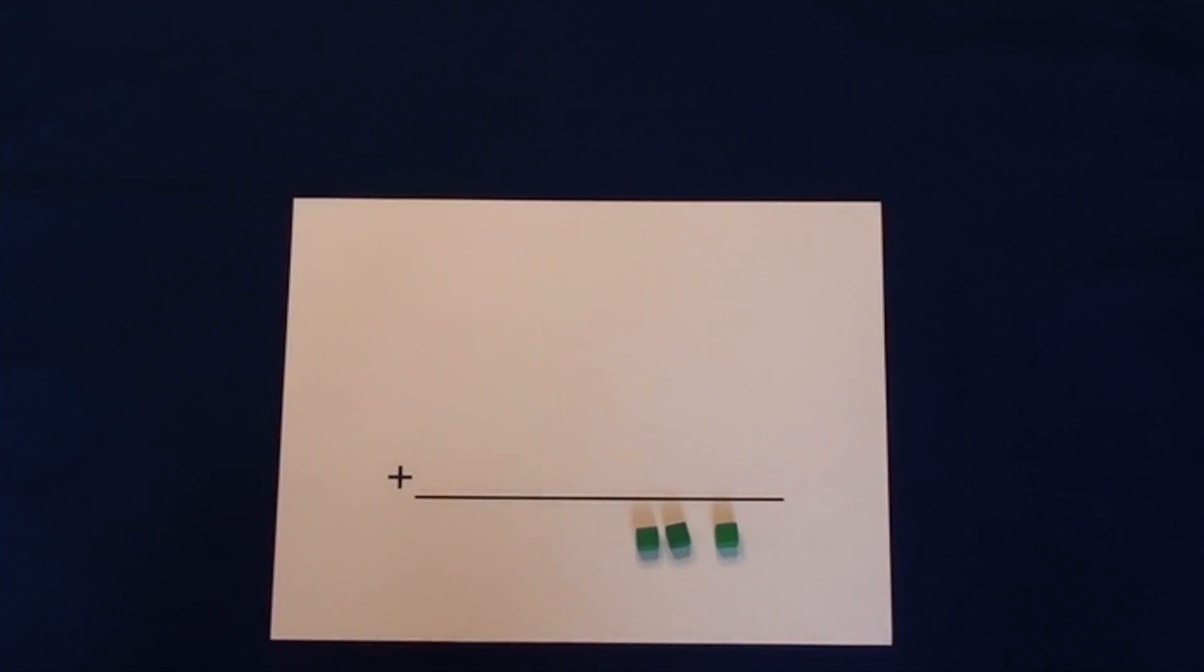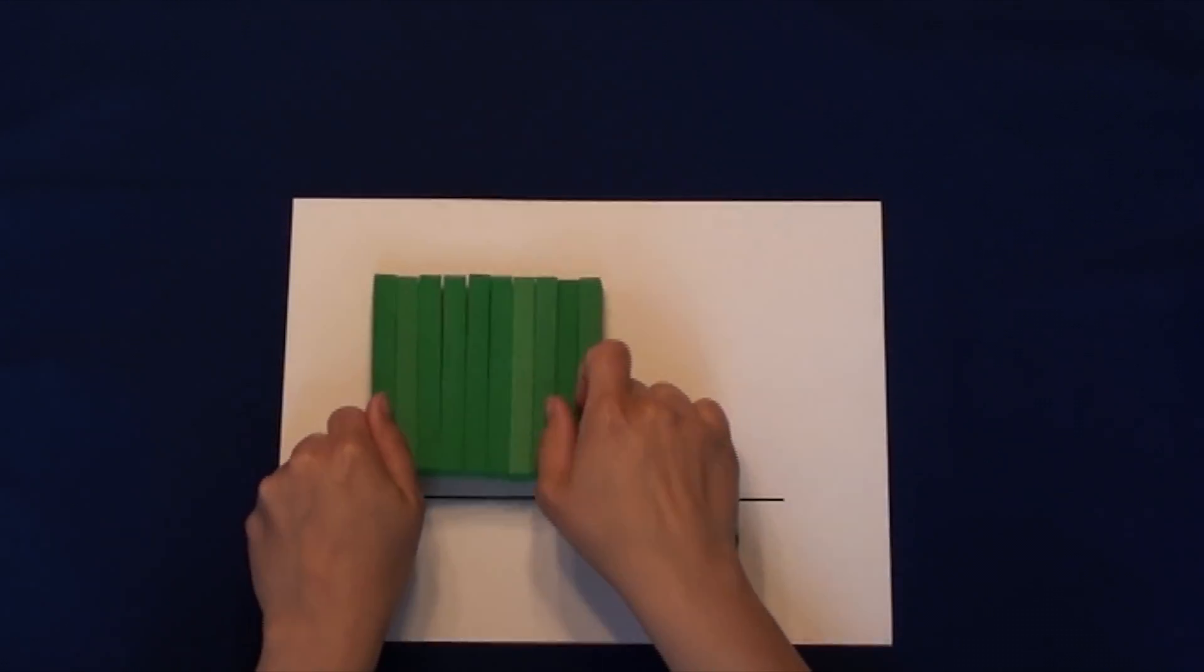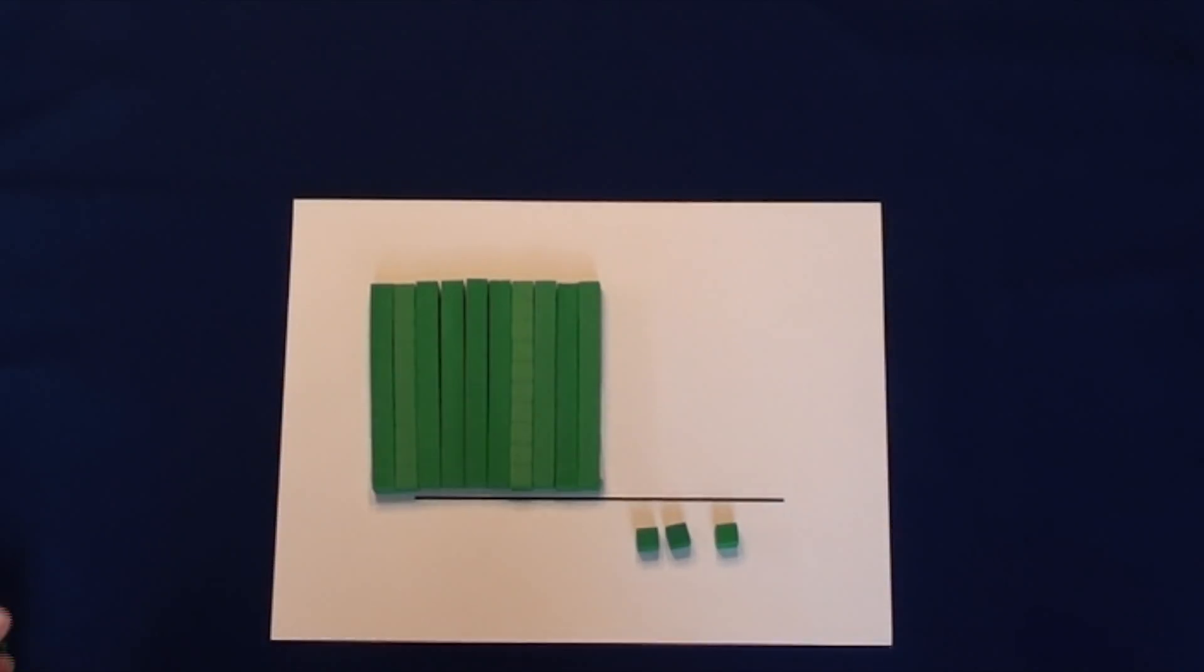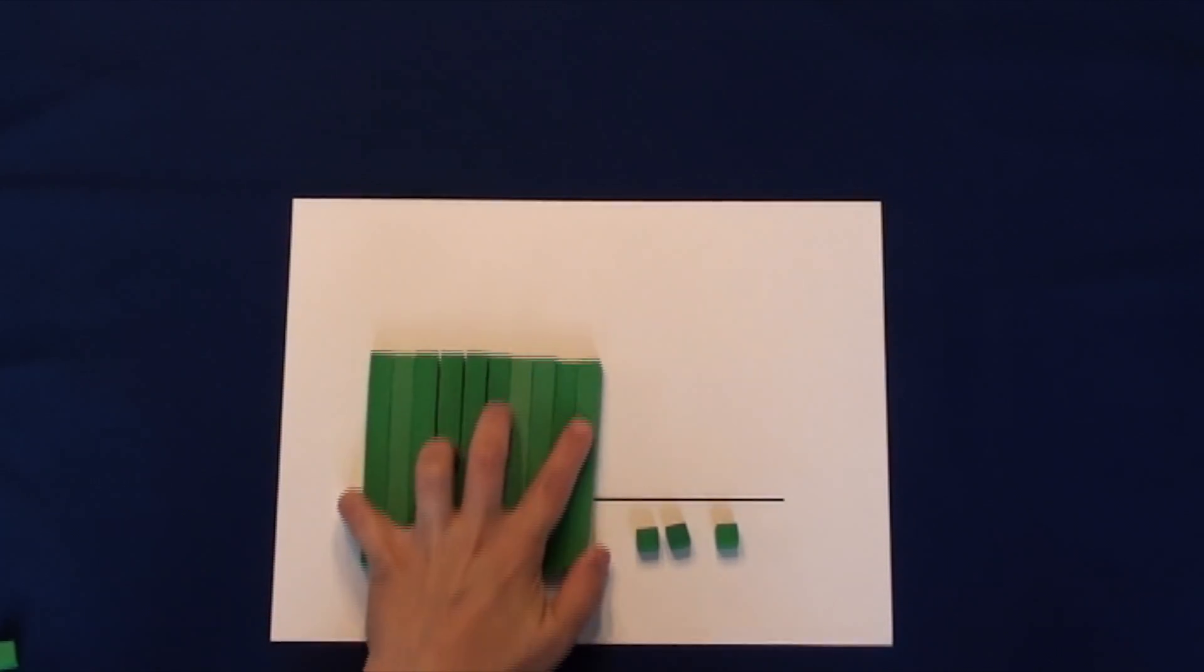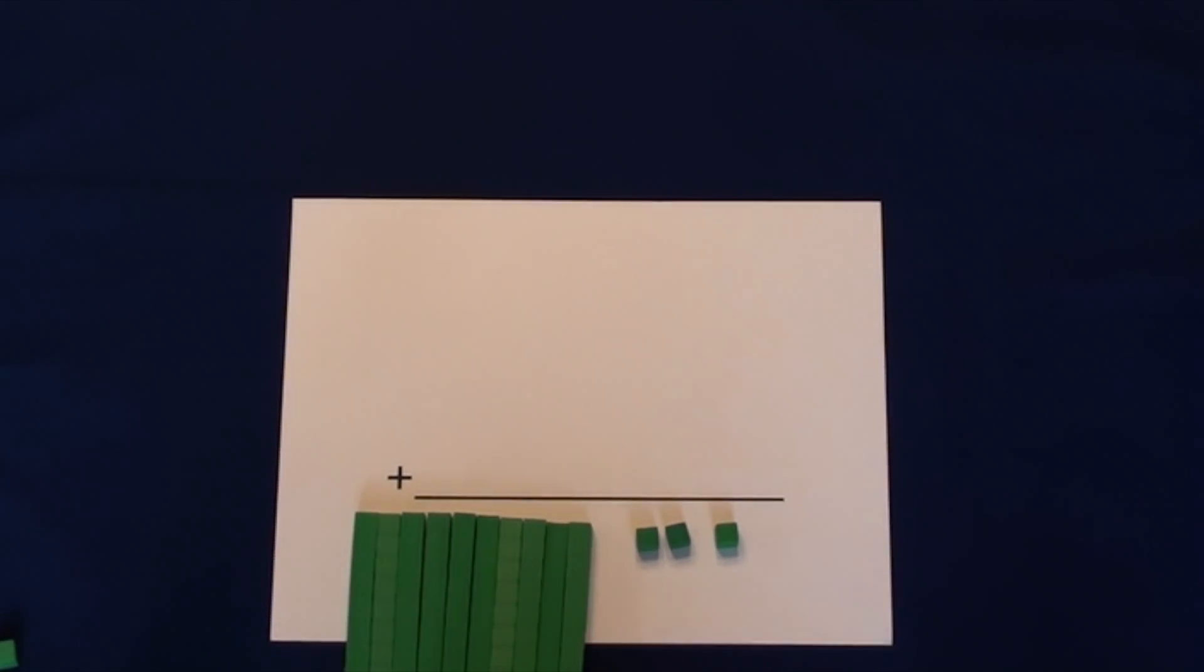10 tens equal 100. There are no remaining tens, since we had only 10 of them. We can drop the 100 down to the solution row because there are no more numbers to add.